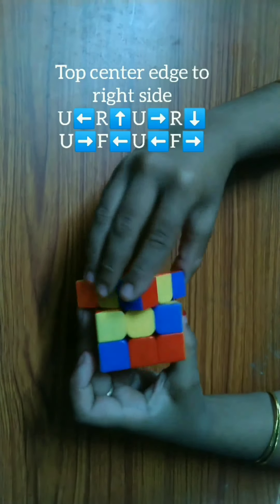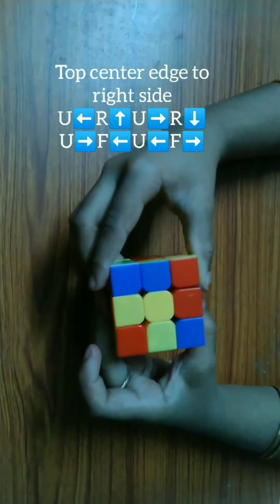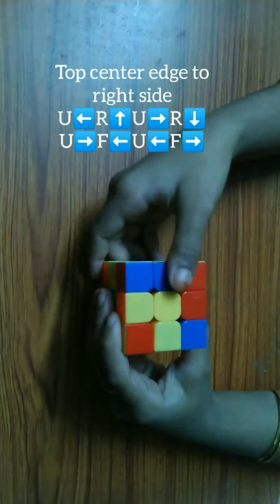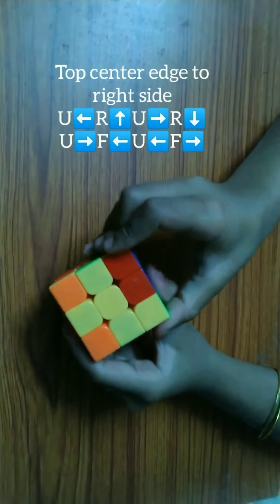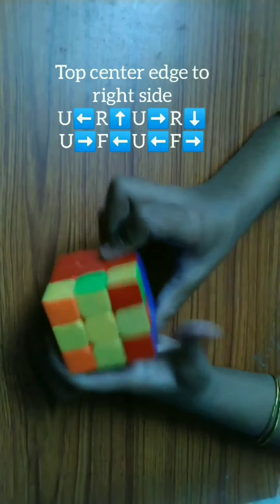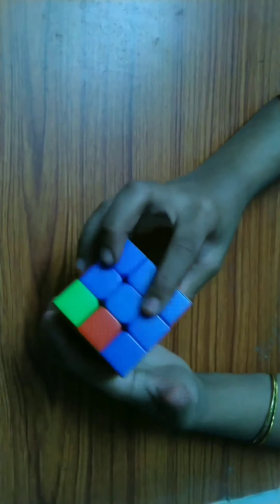Up left, right up, right up, up right, right down, up right, front left, up left, front right. Now we have solved the middle layer.